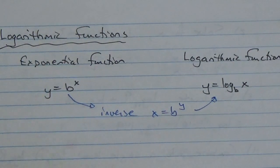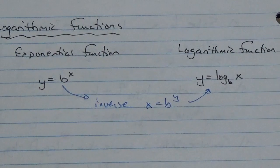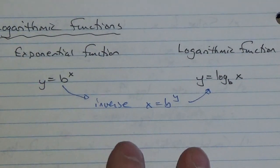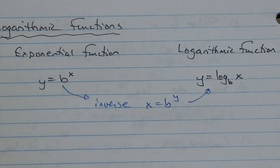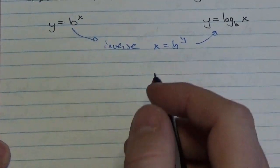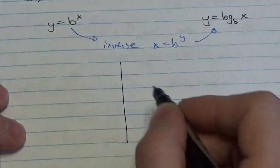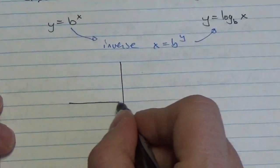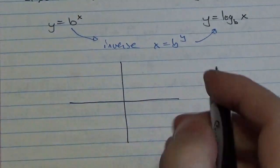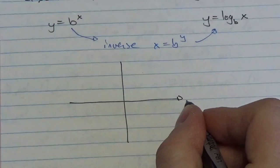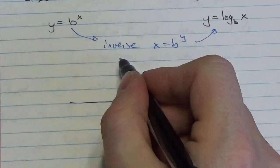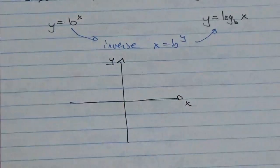Let's explore what that means graphically, because there are a lot of properties of the exponential and logarithmic functions that are more clear when you look at the graphs of them. So here's my grid, my coordinate plane — make that x and y.